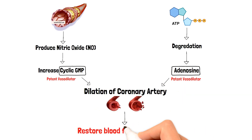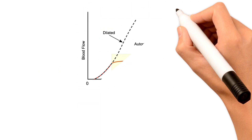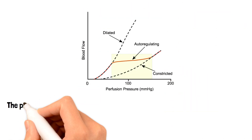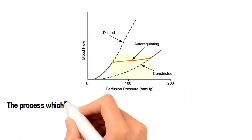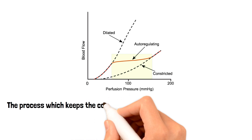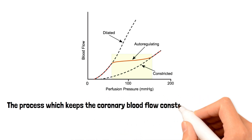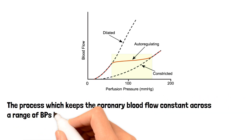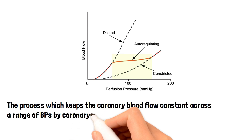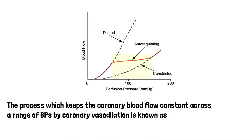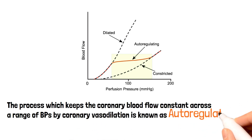Both of these mechanisms result in the vasodilation of the coronary artery and the restoration of oxygen to the myocytes. This process, which keeps the coronary blood flow constant across a range of blood pressures by coronary vasodilation, is known as autoregulation.